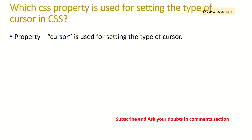Which property in CSS is used for setting the type of cursor? To set a cursor type, we use the property 'cursor', and then we can use values like 'cursor: pointer' or other arrow styles. We have to use the property 'cursor' for this.